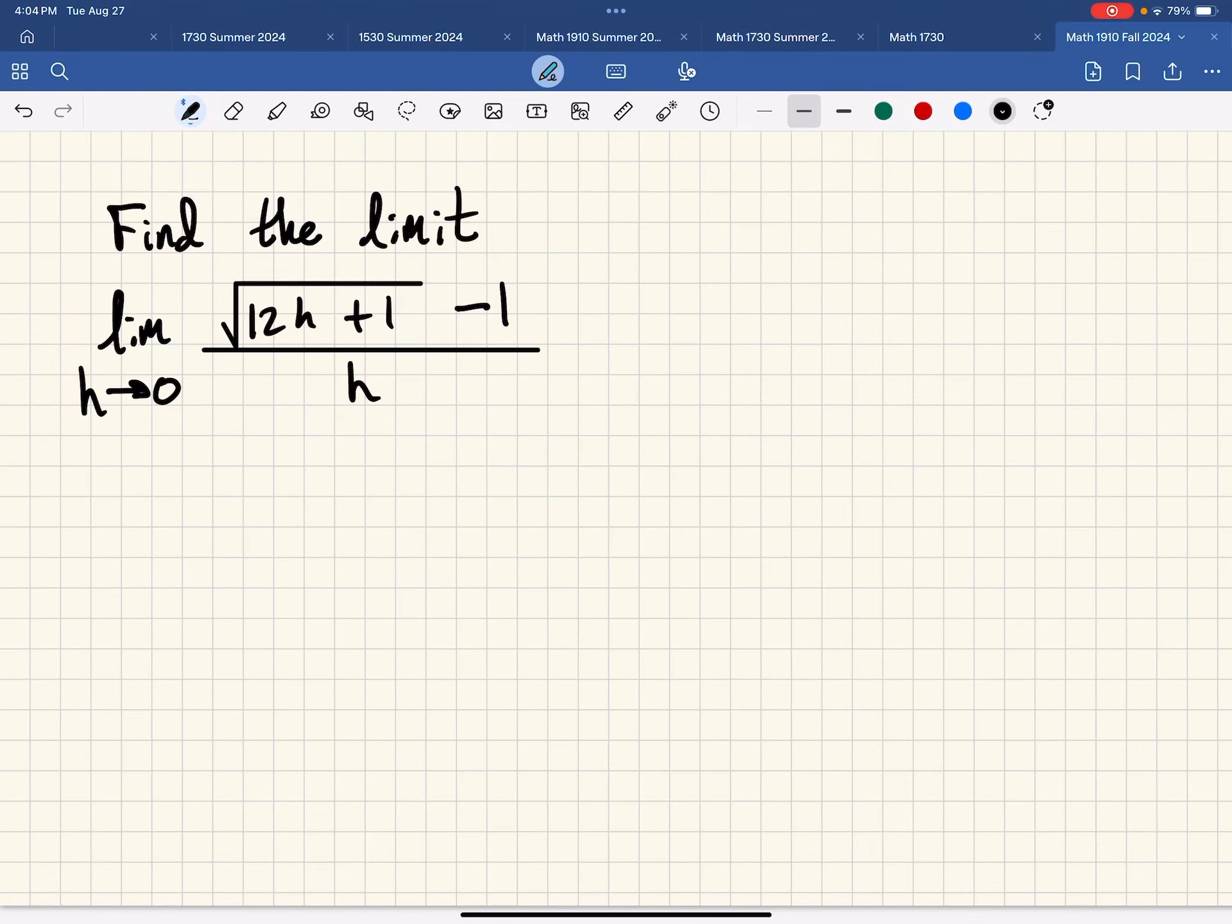We are to find the limit as h goes to 0 of the expression the square root of 12h plus 1 minus 1 over h. We obviously can't do a direct substitution since that would result in a 0 in the denominator.